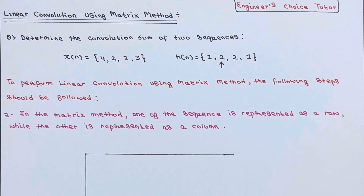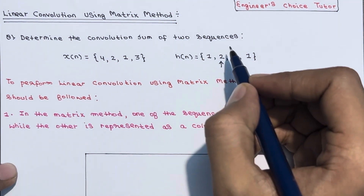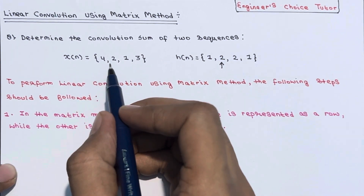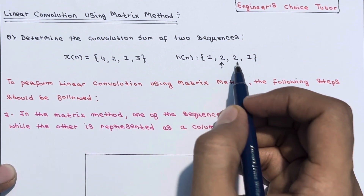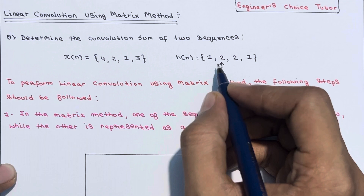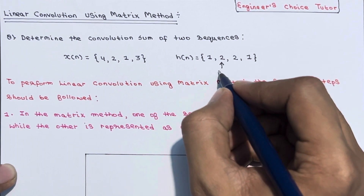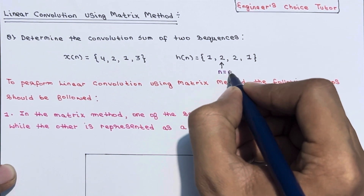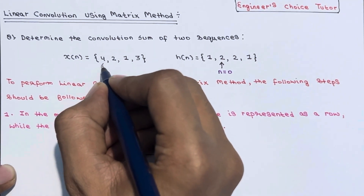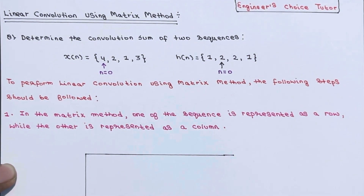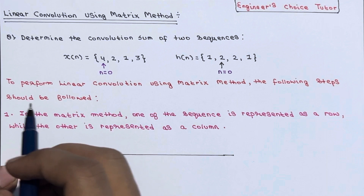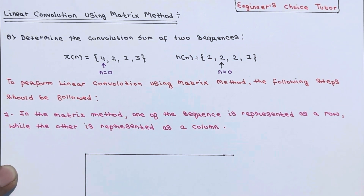In this lecture we will talk about linear convolution using the matrix method — specifically, determining the convolution sum of two sequences: x(n) = {4, 2, 1, 3} and h(n) = {1, 2, 2, 1}. The arrow term represents n = 0. If nothing is indicated, the first term is at n = 0.